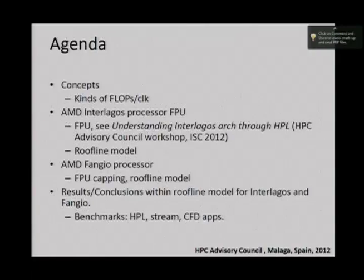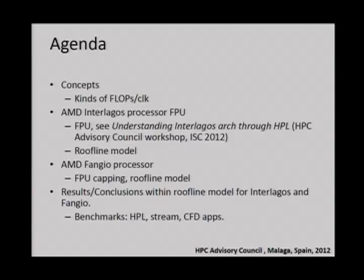I want to talk first of all about kinds of flops, because this is very important. Then I will mention a few features of the Interlagos processor. There is another presentation I did in June that I recommend for more background on Interlagos technology. Then I go into the roofline model — you can Google it. Then I go into the modified processor Fangio, and show its representation in the roofline model. Finally I go through some results and conclusions.